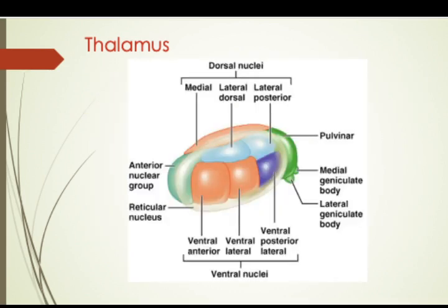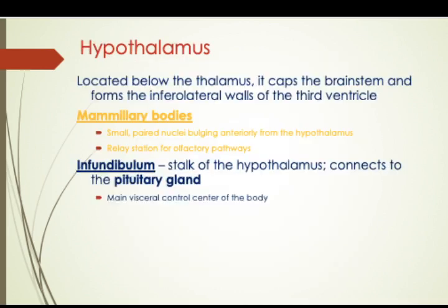This is how the thalamus looks, with the dorsal nuclei, the anterior, the reticular, and the ventral nuclei. The hypothalamus is located just below the thalamus, caps the brain stem, and forms the inferolateral wall of the third ventricle. It connects to the pituitary gland via the infundibulum.